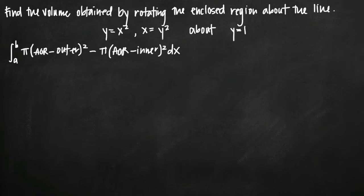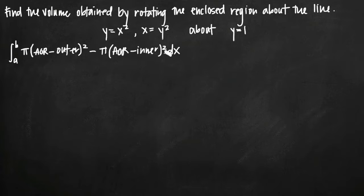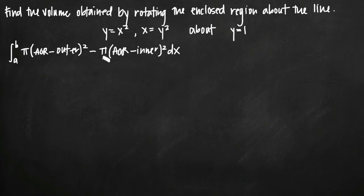Today we're going to be talking about how to find the volume obtained by rotating these two curves about the line y equals 1. We've been asked to find the intersection points of the two curves y equals x squared and x equals y squared, define the region enclosed by these curves, and then imagine that region is rotated around the axis y equals 1 to find the volume.